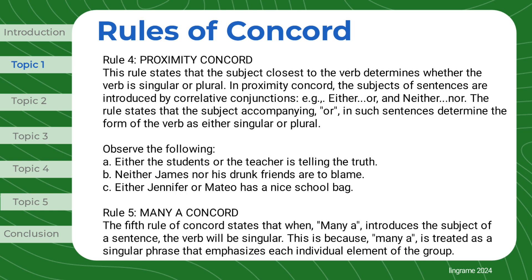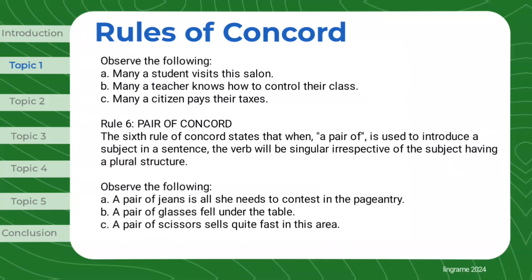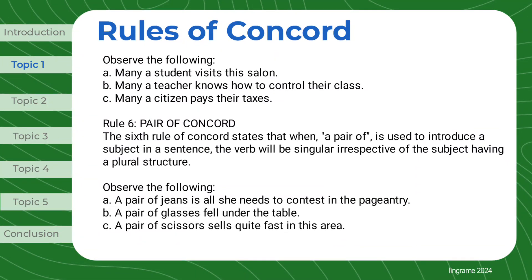Rule 5: Many a Concord. The fifth rule of Concord states that when 'many a' introduces the subject of a sentence, the verb will be singular. This is because 'many a' is treated as a singular phrase that emphasizes each individual element of the group. Observe the following: 'Many a student visits this salon.' 'Many a teacher knows how to control their class.' 'Many a citizen pays their taxes.'